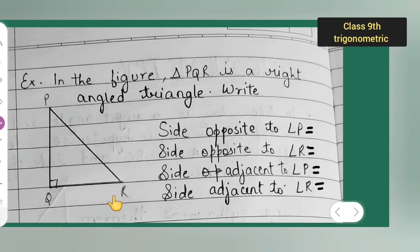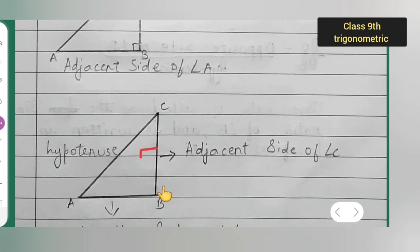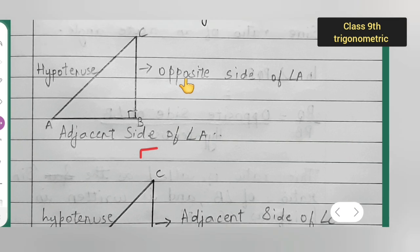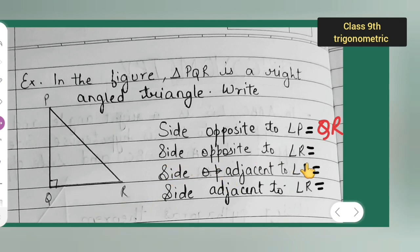Side opposite to angle R: angle R is here. Just as opposite side of angle A is BC, here the side opposite to angle R will be PQ. You can take down PQ. Next, look for the side adjacent to angle P — angle P is over here.